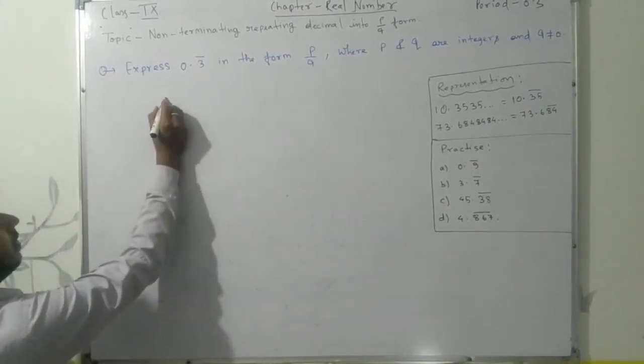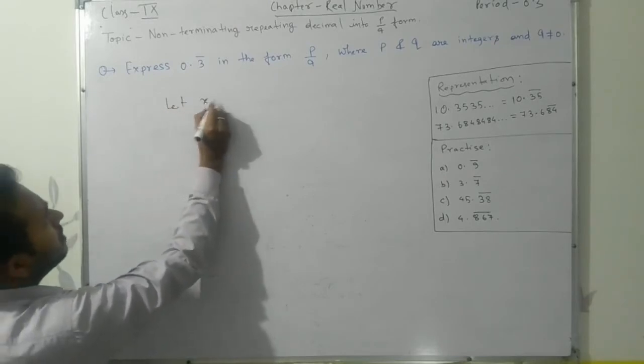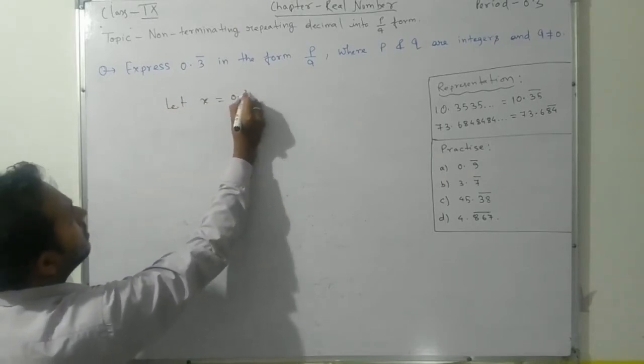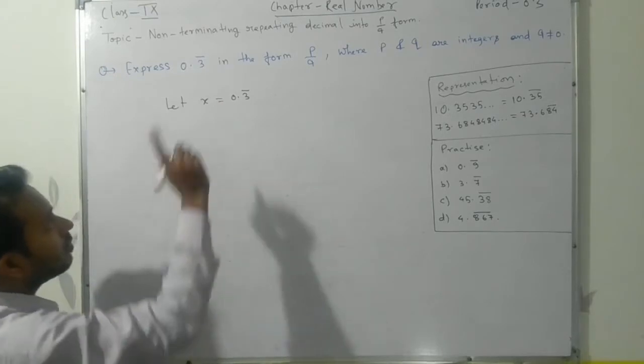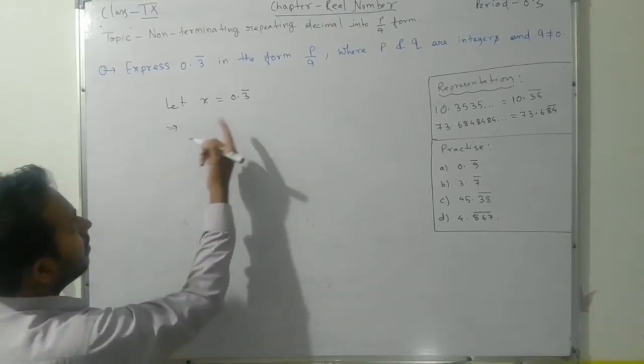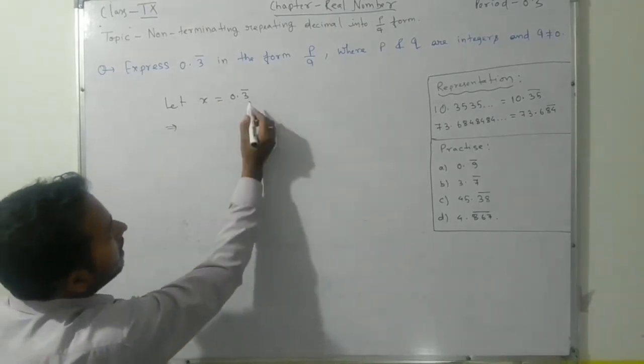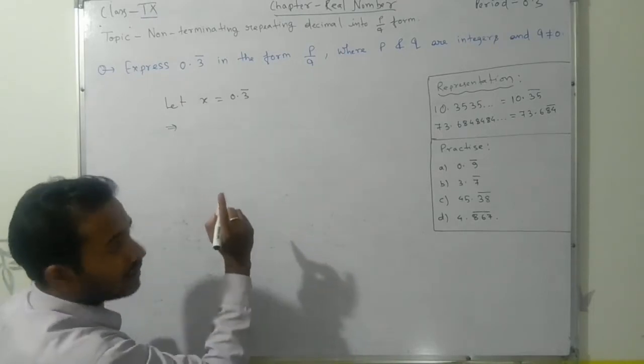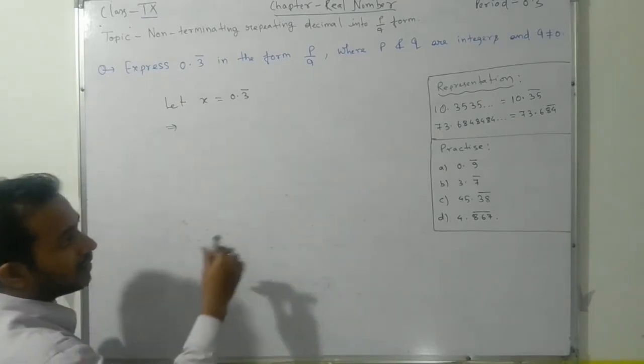Let x equals 0.3 bar. Here you have to multiply 10 on both sides. Why 10? If the repeating number is a single digit, then you have to multiply by 10.